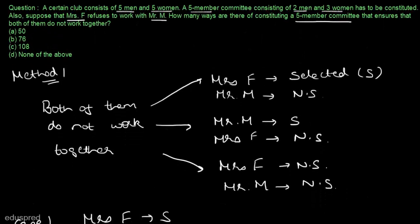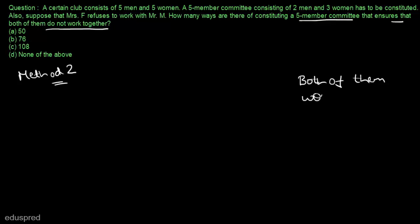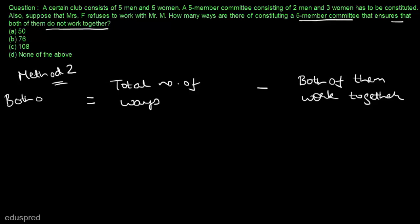This is one method to solve the question. Let's move to method number 2, which is actually a simpler method. We have to find the number of ways of constituting a 5-member committee where both of them do not work together. A simpler approach is to first calculate the number of ways in which both of them work together, and then subtract this from the total number of ways to form a 5-member committee. That gives us the number of ways where both do not work together.